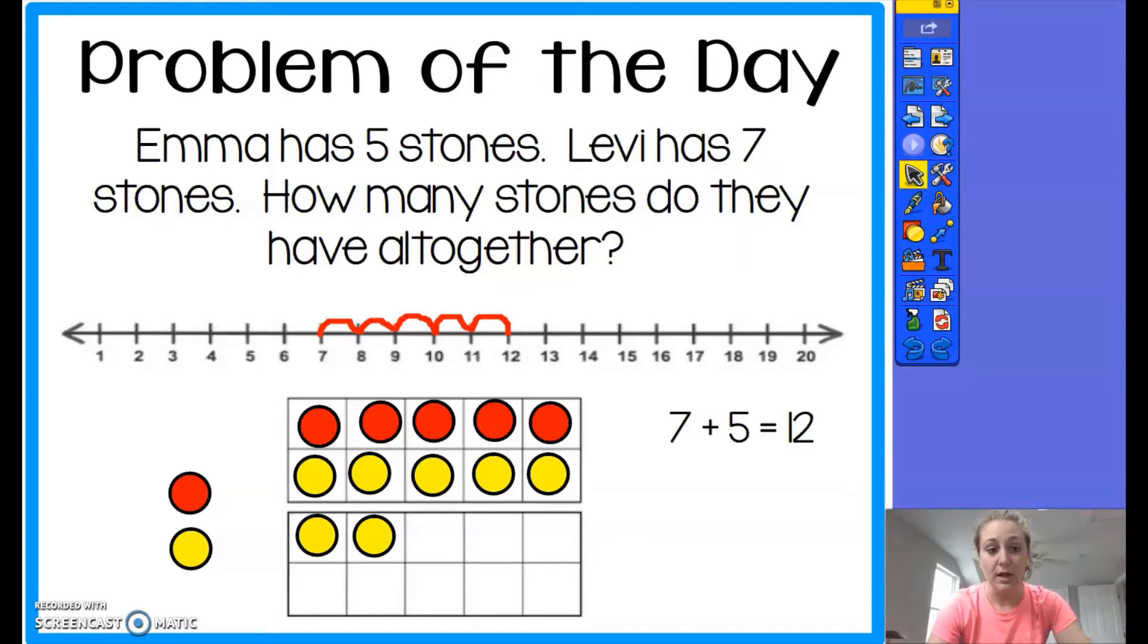If we wanted to put this into an equation, we could do it like this. We could say Emma had five stones plus the seven stones that were Levi's gives us a total of twelve stones. In our classroom we kind of like to turn our equations into story problems.